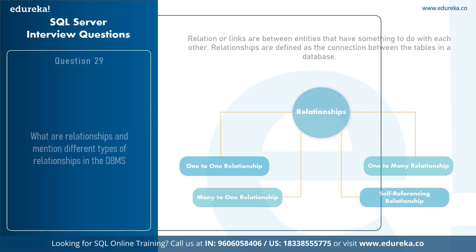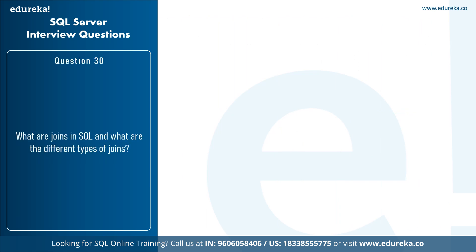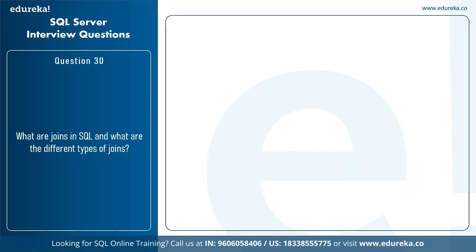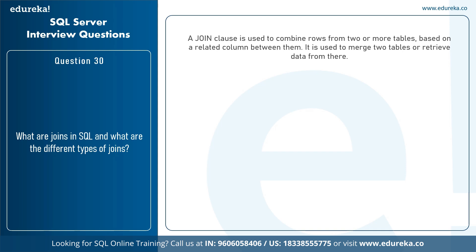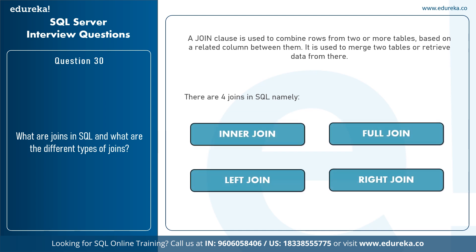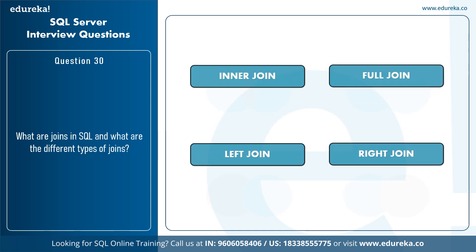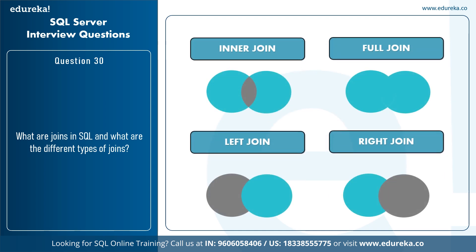The next question is: what are JOINs in SQL and what are the different types? A JOIN clause is used to combine rows from two or more tables based on a related column between them, used to merge tables or retrieve data. There are mainly four types of JOINs in SQL: INNER JOIN, RIGHT JOIN, LEFT JOIN, and FULL JOIN.